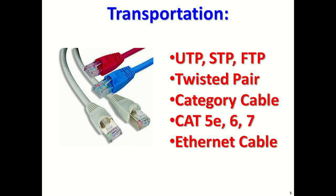Transportation is the true essence of what Z-Band does. We take the RF spectrum and transport it over structured cable — twisted pair, CAT6, or perhaps most commonly known as Ethernet or computer cable. It's a piece of cabling that consists of eight copper wires, and those eight copper wires make up four pairs, hence the name twisted pair.